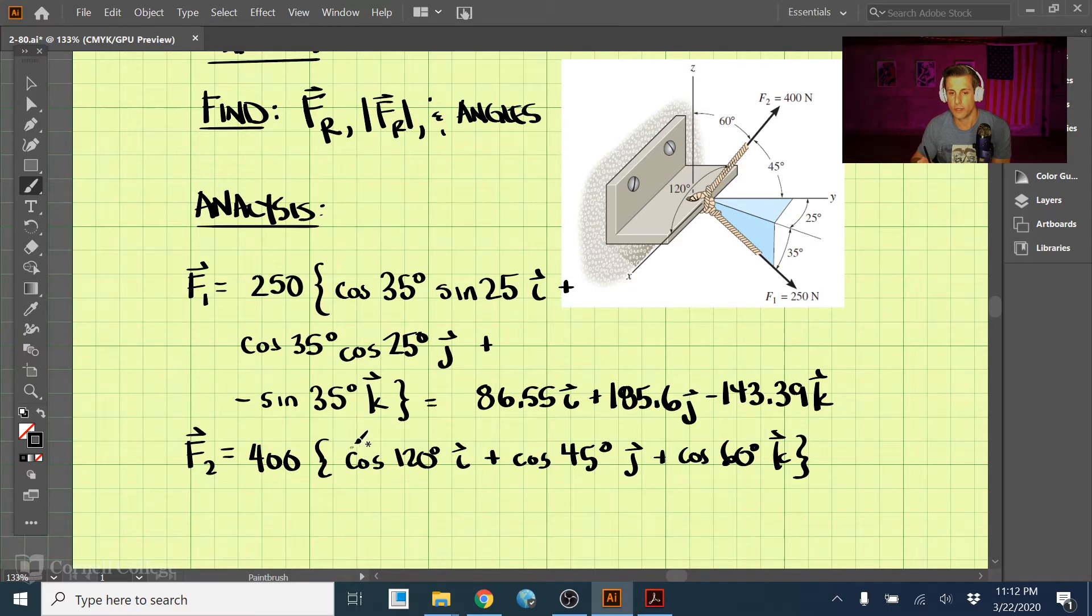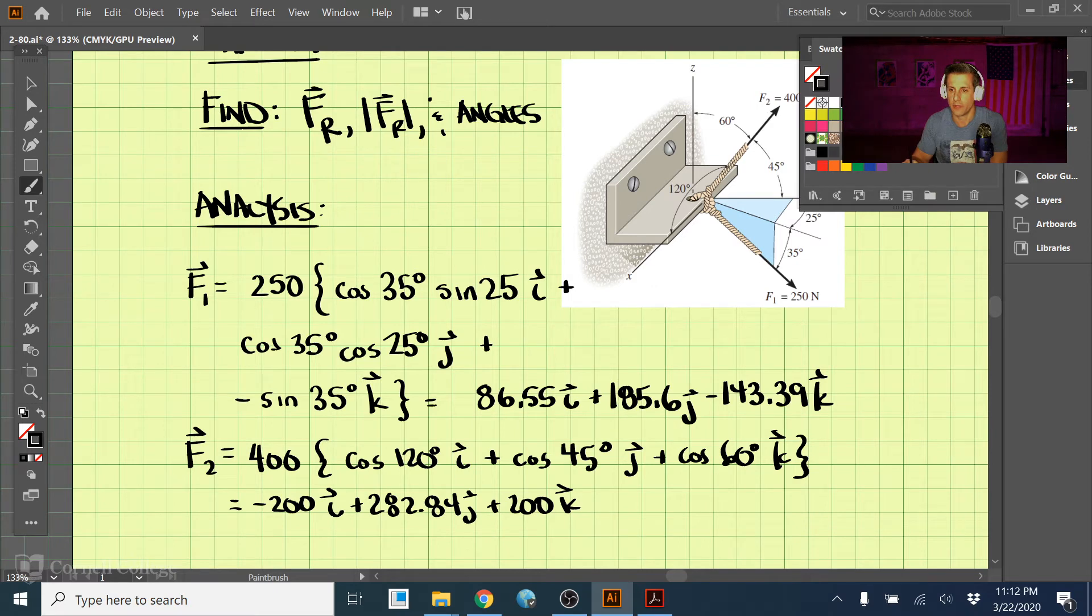So again, distributing this out, the 400 out, we come up with negative 200i plus 282.84j plus 200k. So now we have these equations for both F1 and F2.